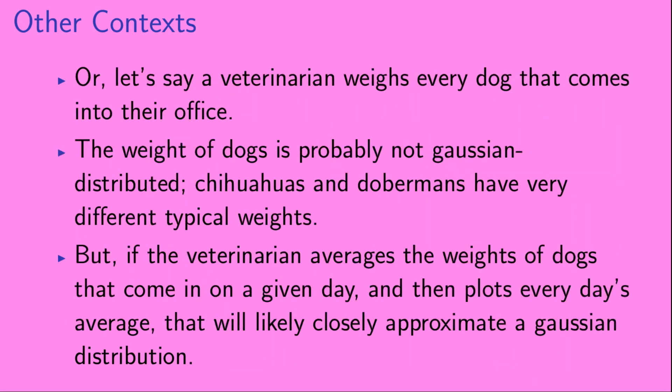As another example, you could roll a fair die many times and add up the results you get. If you rolled the die enough times, the probability distribution for the sum would look like a Gaussian. As another example, let's say a veterinarian weighs every dog that comes into their office. Now, the weight of dogs is probably not Gaussian distributed. Chihuahuas and Dobermans have very different typical weights. But if the veterinarian averages the weights of dogs that come in on a given day and then plots every day's average, that will likely closely approximate a Gaussian distribution.